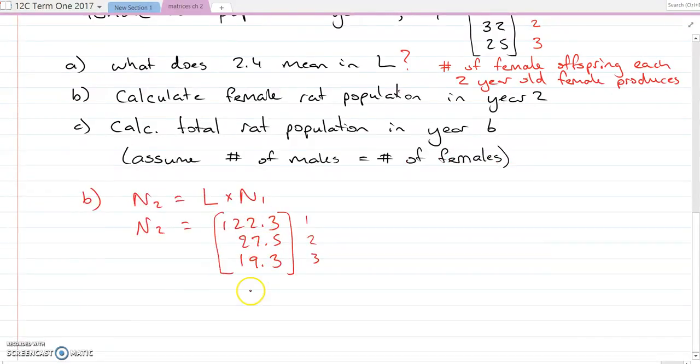So the total female rat population, the total female population is just the one-year-olds, the two-year-olds, the three-year-olds all added together. So 122.3 plus 27.5 plus 19.3 is 169.